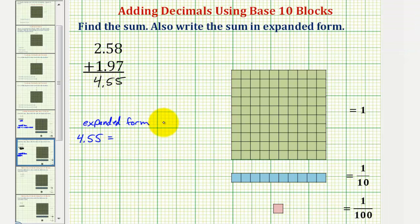So that would be the expanded form, four plus five-tenths plus five-hundredths. I hope you found this helpful.